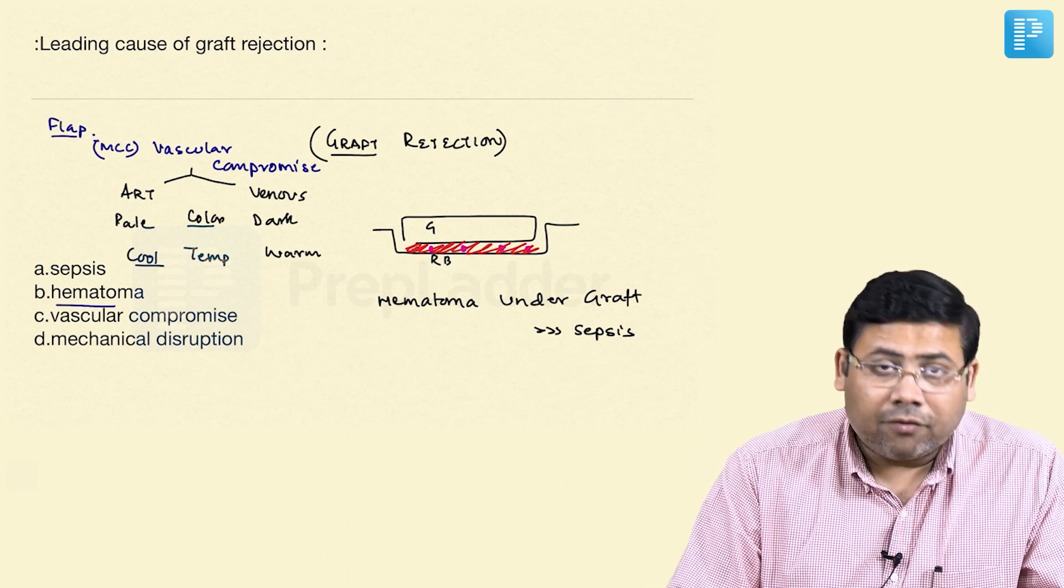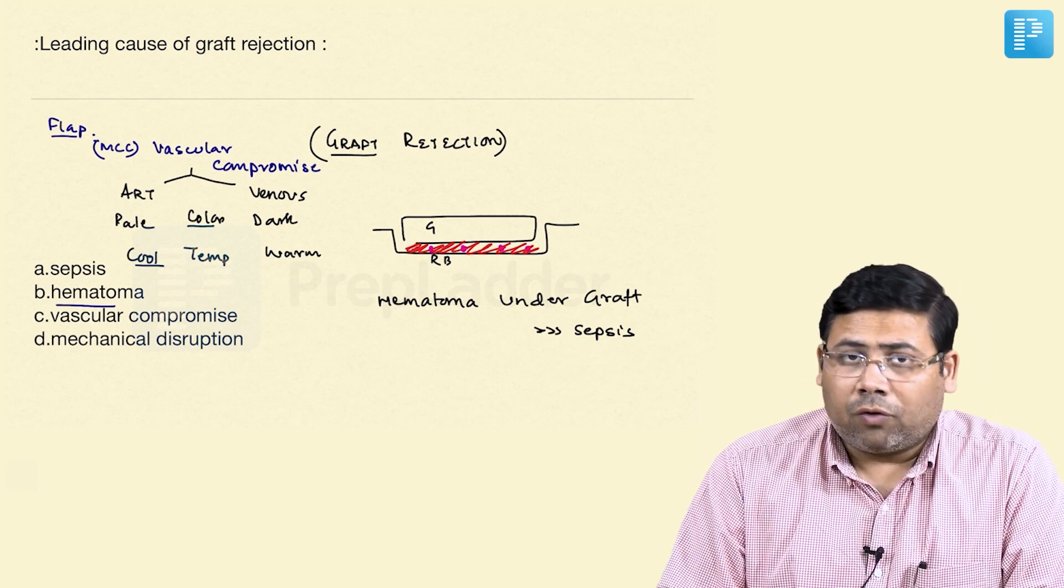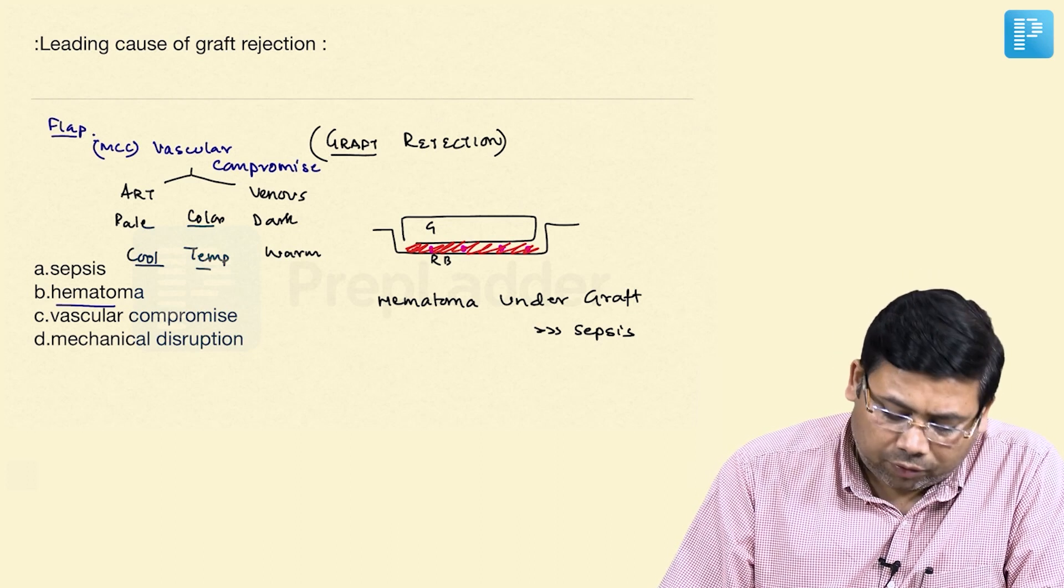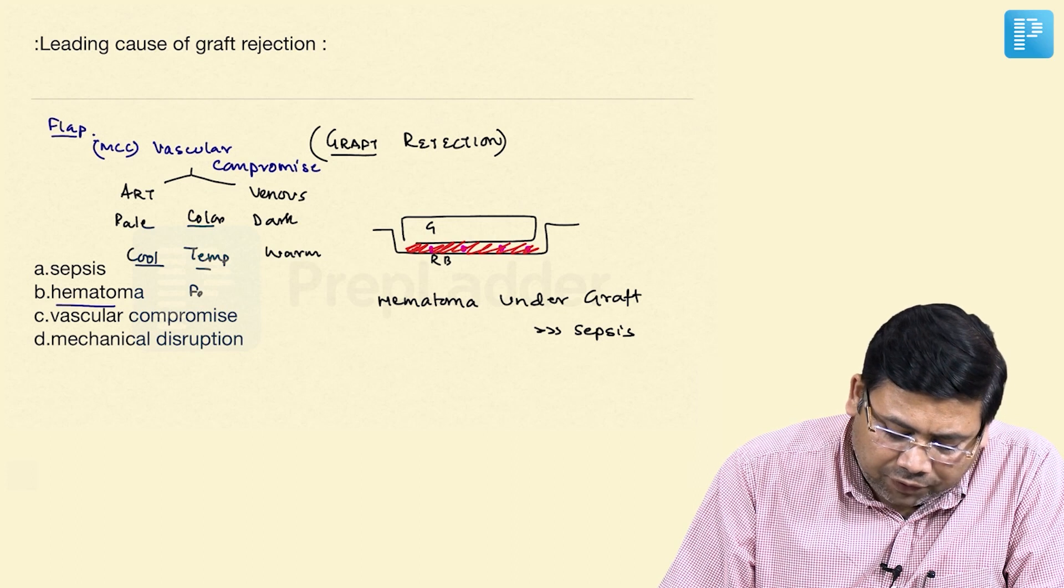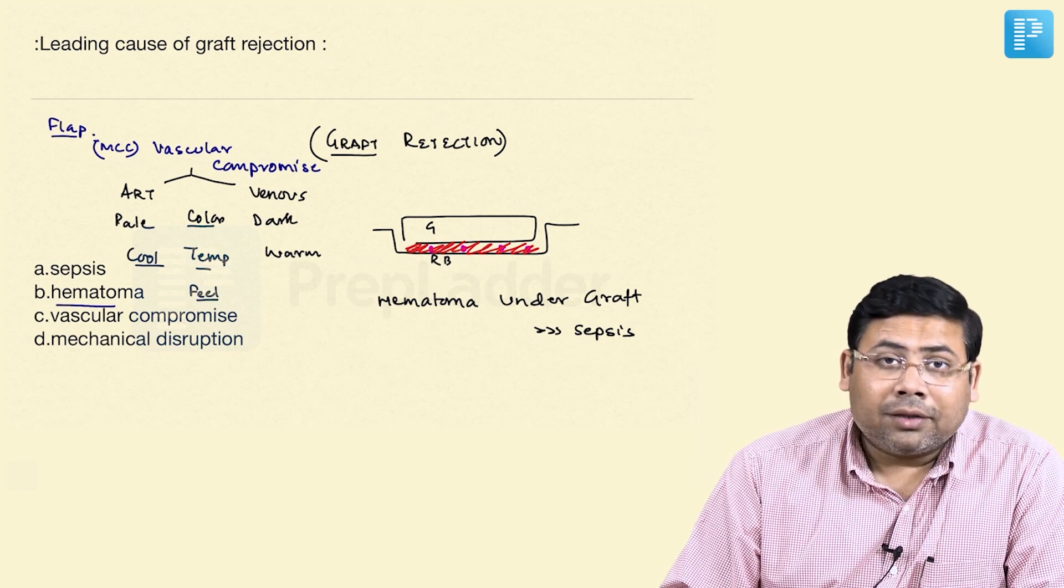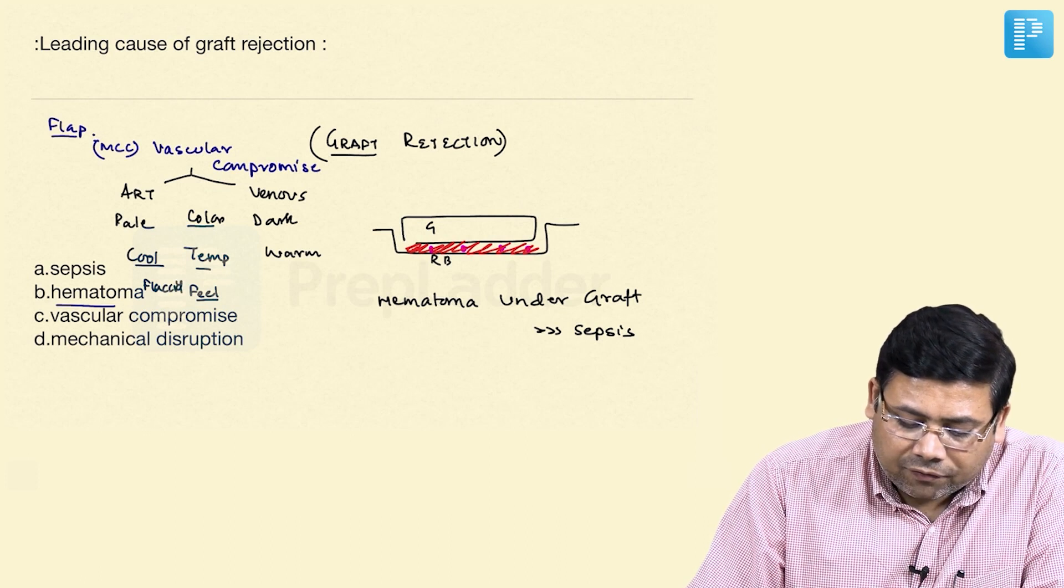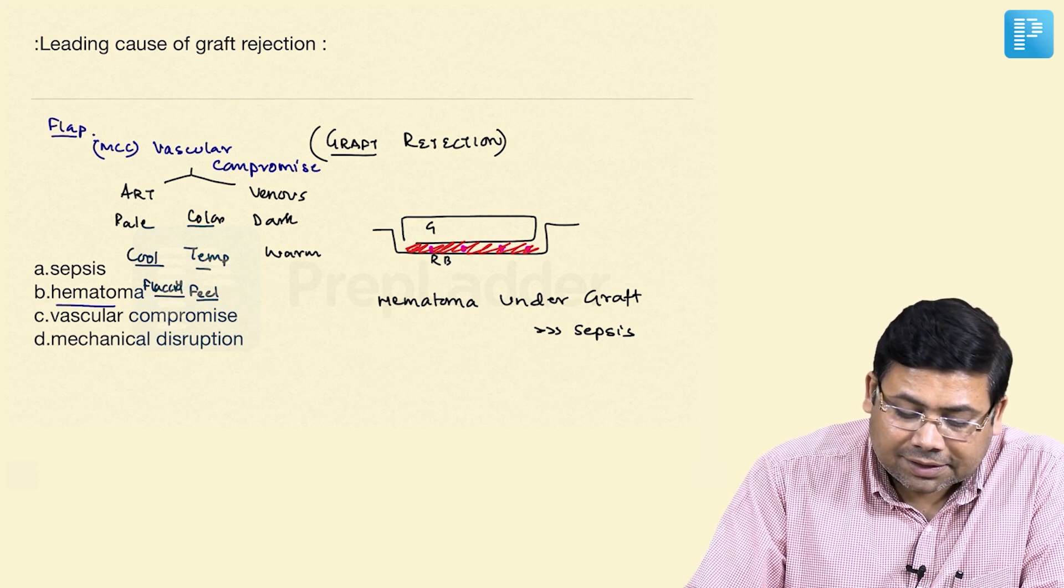Color, temperature, what else is important students? The next thing we have is the feel. The arterial is having less blood so it is flaccid, and this is tense.